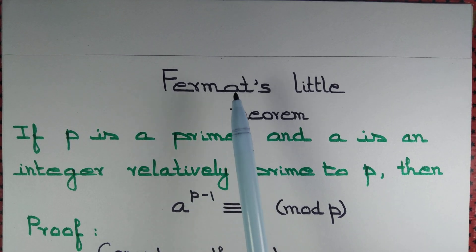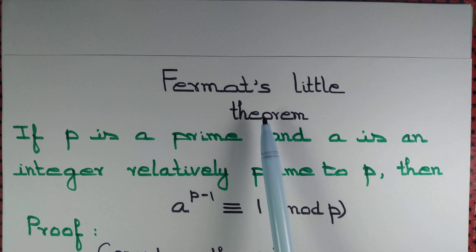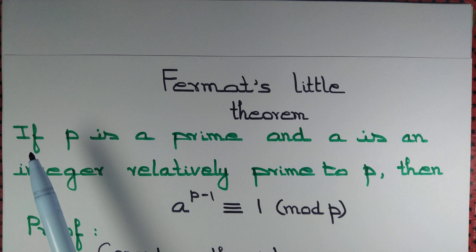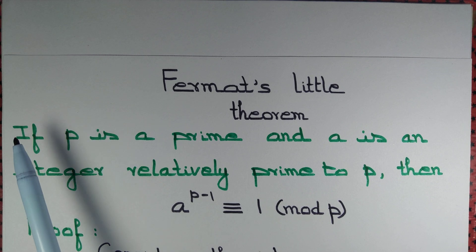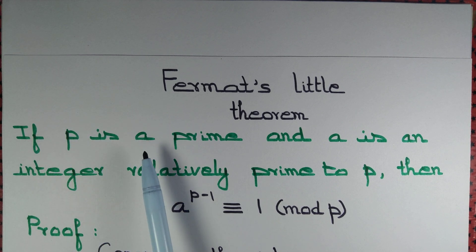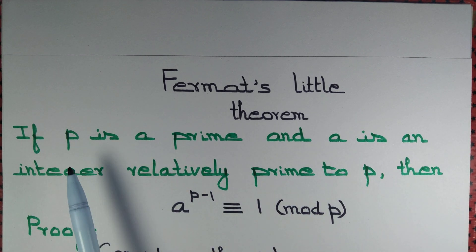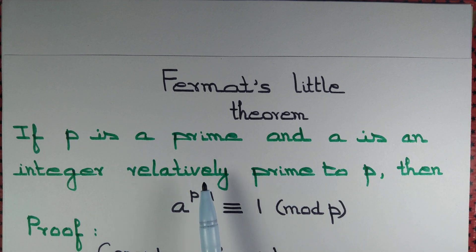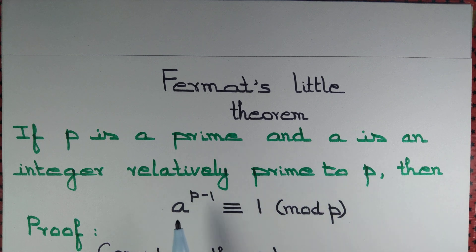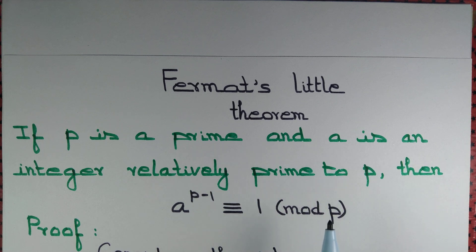Let us prove Fermat's Little Theorem. It says: if p is a prime and a is an integer relatively prime to p, then a to the power p minus 1 is congruent to 1 modulo p.